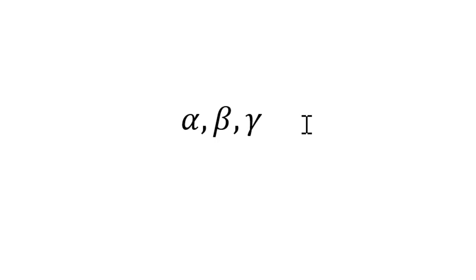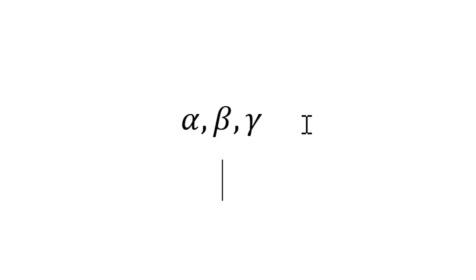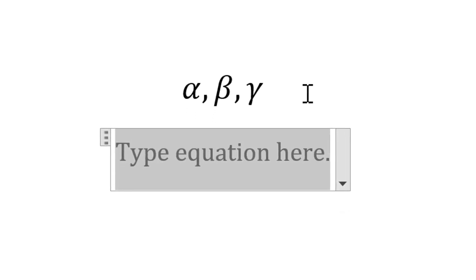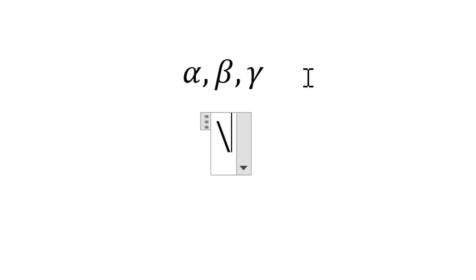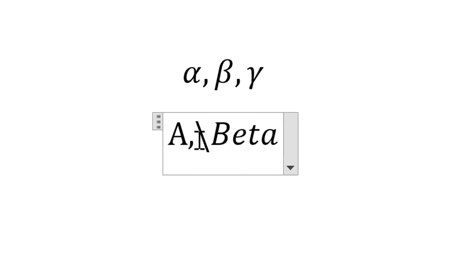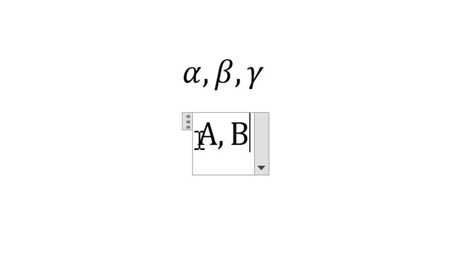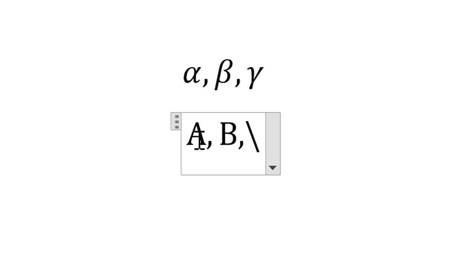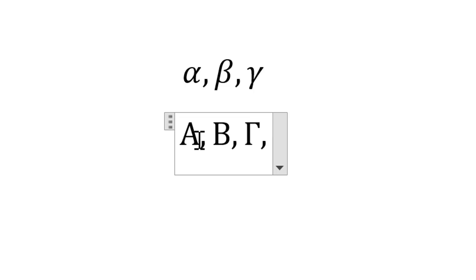Similarly, you can also write these Greek letters in capital as well. Just insert an equation by pressing Alt and Equal. Now I will write capital alpha. So just replace this small a with capital A and press space. This is capital alpha. Then capital beta: just replace B with capital B and press space. Similarly for gamma.